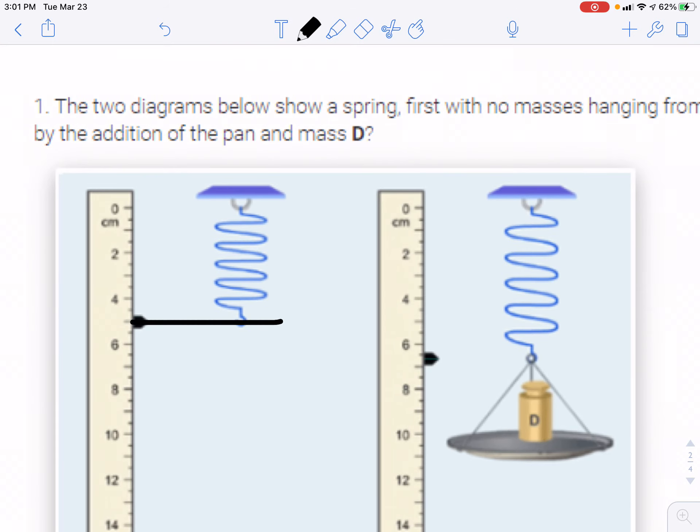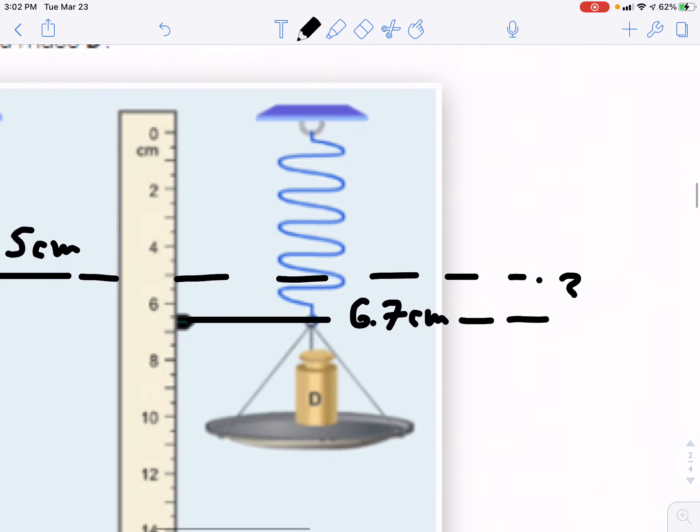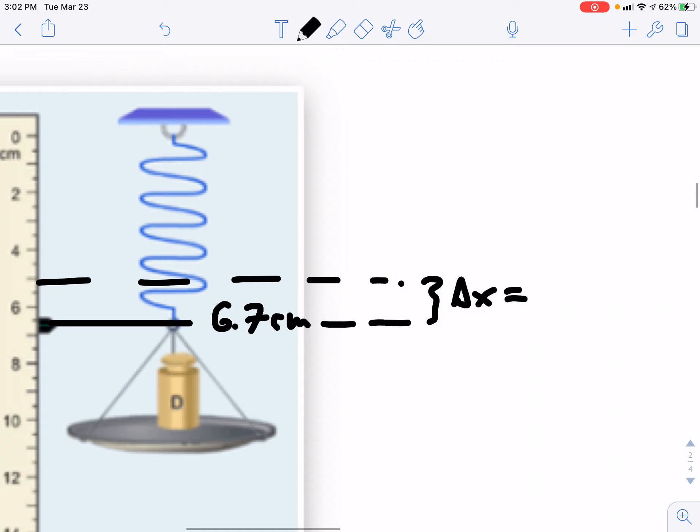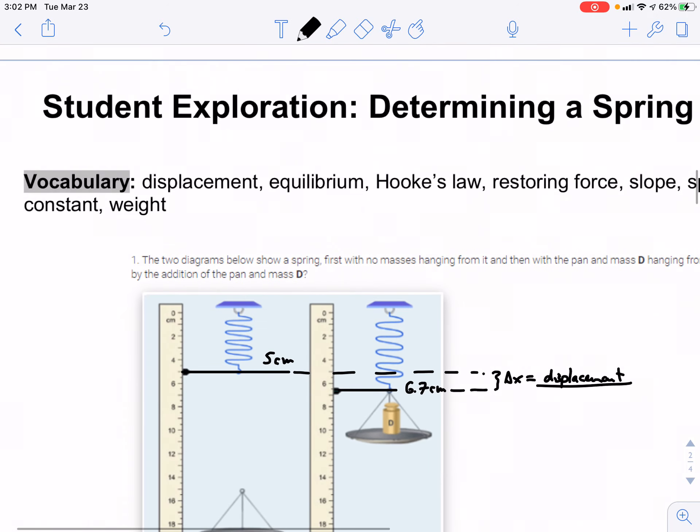First, let's take a look here. We can see that the original line is somewhere around 5 centimeters, and this line is not quite 7, nor is it 6 and a half. That line looks to be about 6.7, which means this distance to this distance would be the displacement or the stretching of the spring, which is what we can safely identify as our concept.